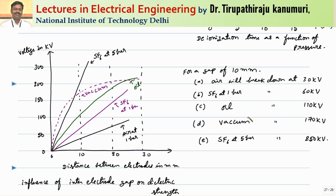Between oil and SF6 comes the vacuum circuit breaker. Initially, for small distances, the dielectric strength build-up in vacuum is far better than even SF6. But as the gap increases, vacuum circuit breakers are not as efficient as SF6. Generally, for 10 mm gap in vacuum, protection is up to 170 kV. For low voltage applications like 33 kV or 66 kV, the gap required is very less. Out of all circuit breakers, for low or medium voltages, vacuum needs the minimum gap, followed by SF6, then oil, then air. But for extreme high voltage above 220 kV, SF6 has the best performance.